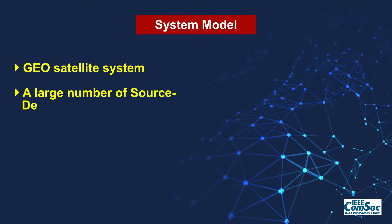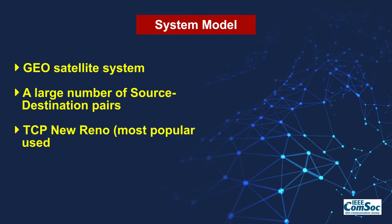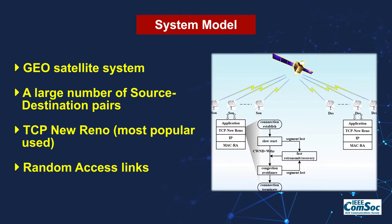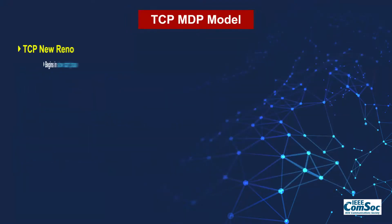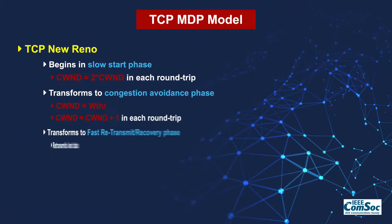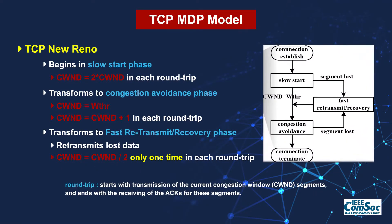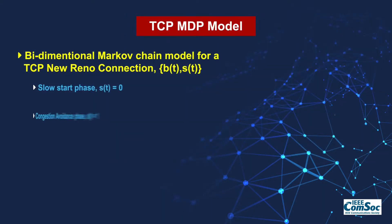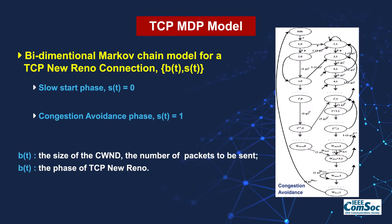We consider a geo-satellite system with a large number of source-destination pairs, and use the most popular TCP New-Reno protocol over a random access link. TCP New-Reno mainly includes three parts: a slow-start phase, a congestion avoidance phase, and a loss-triggered retransmission recovery phase. We use a bi-dimensional Markov chain model for the TCP New-Reno connection, including the slow-start phase and the congestion avoidance phase.